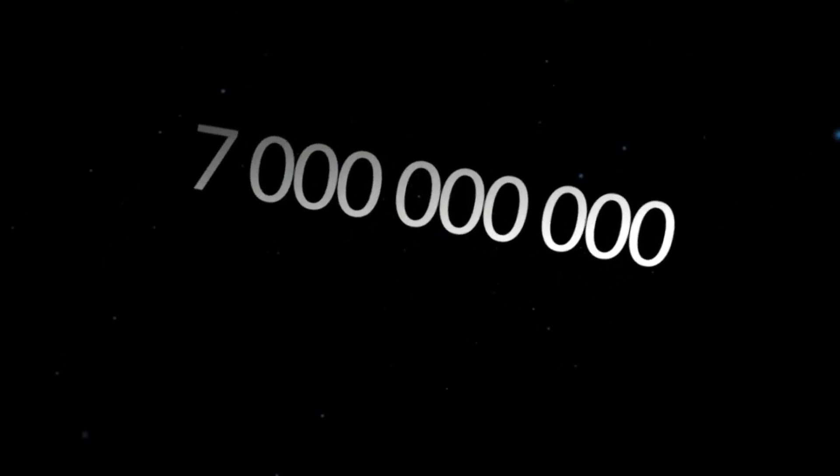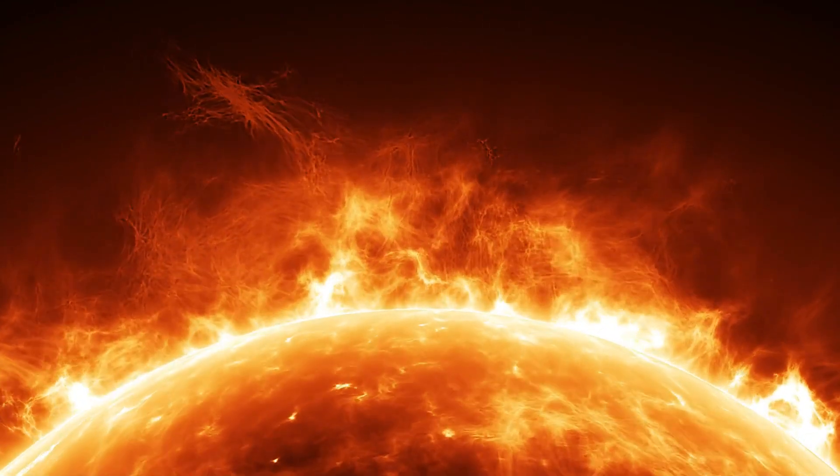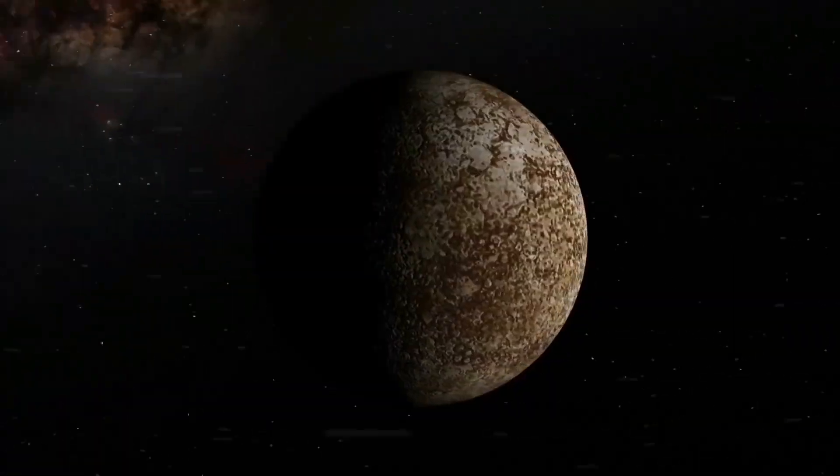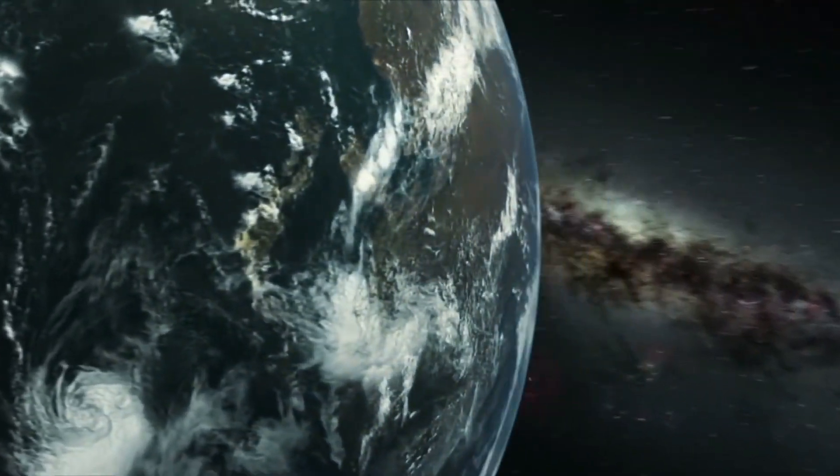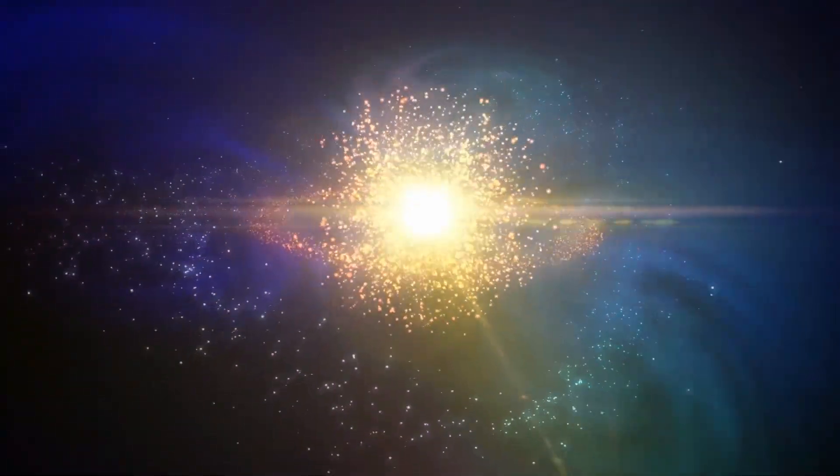In 7 billion years the Sun will hit its maximum radius, 256 times its current size. Mercury, Venus and maybe Earth will be destroyed. And then the Sun becomes a carbon-oxygen white dwarf with about 50% its present mass.